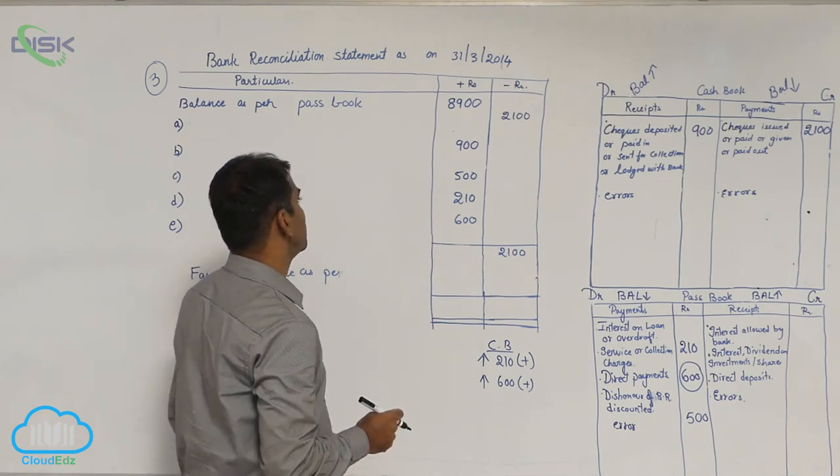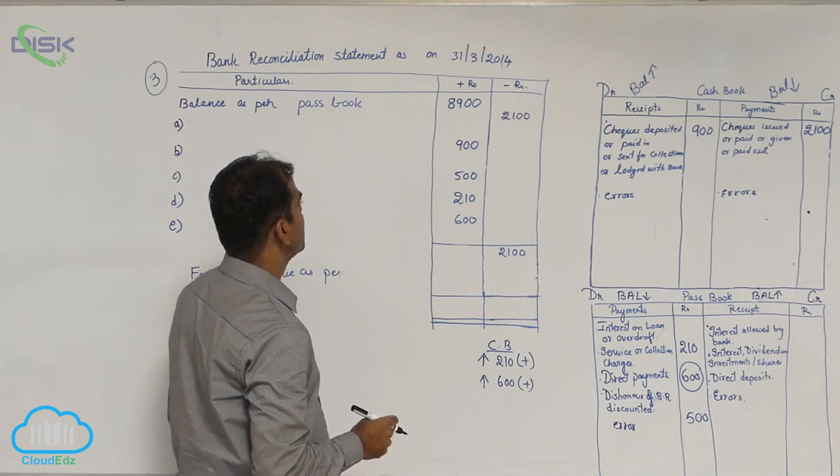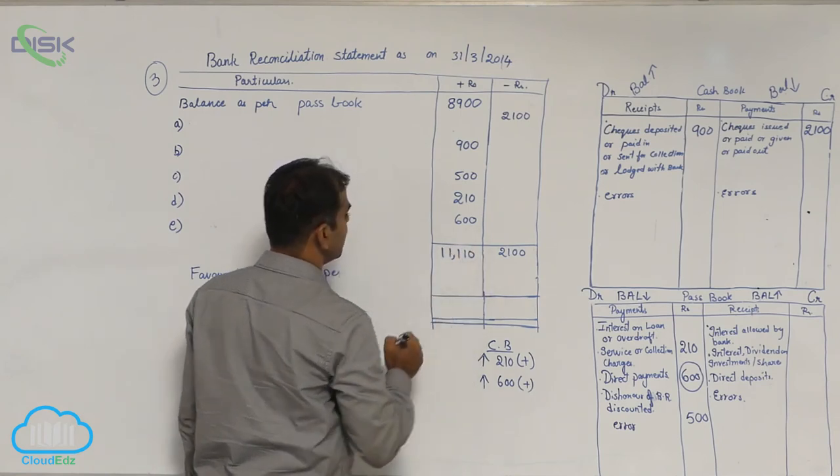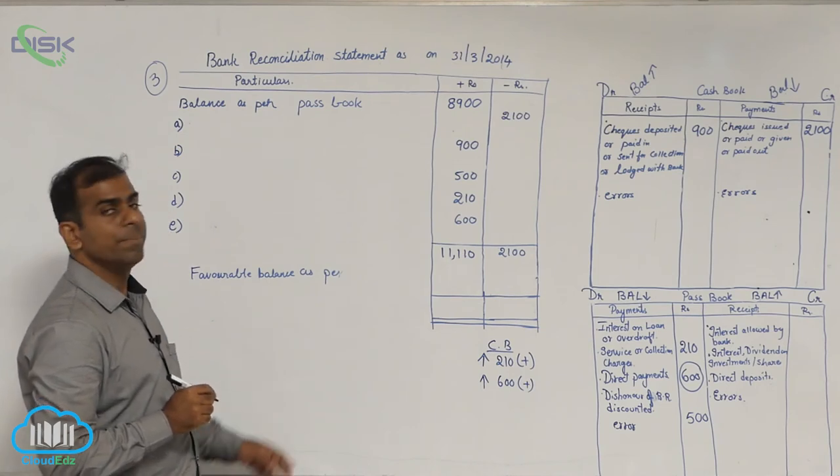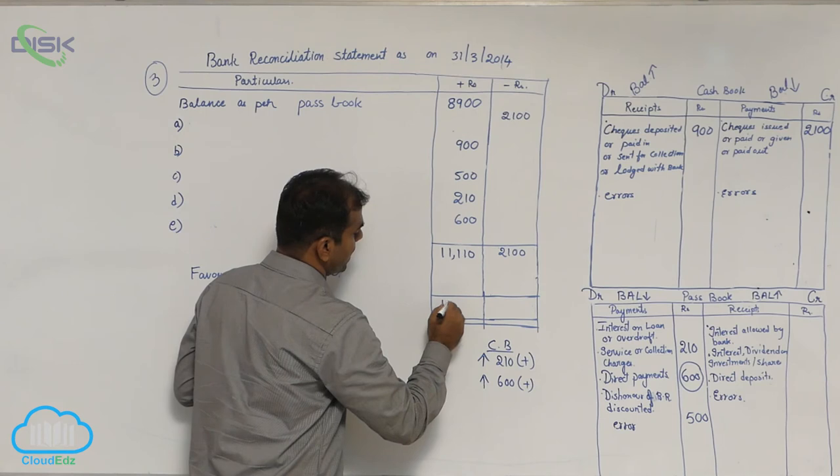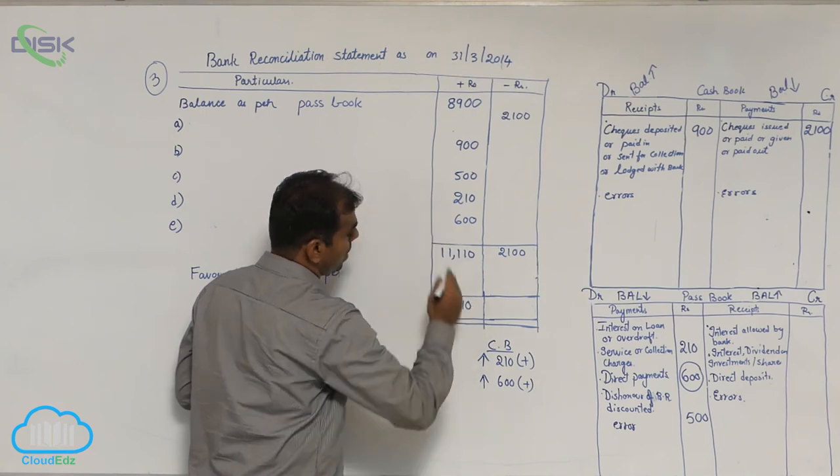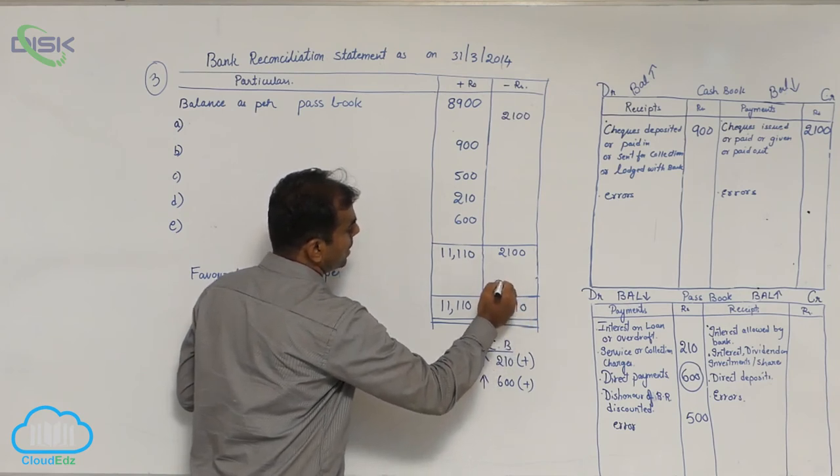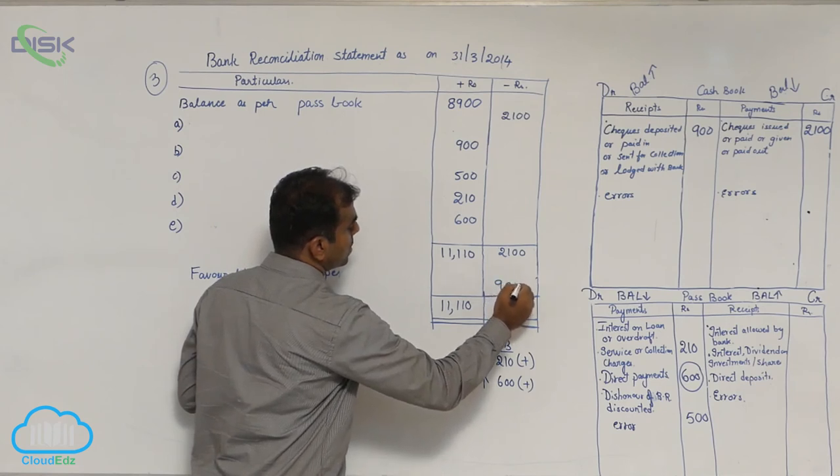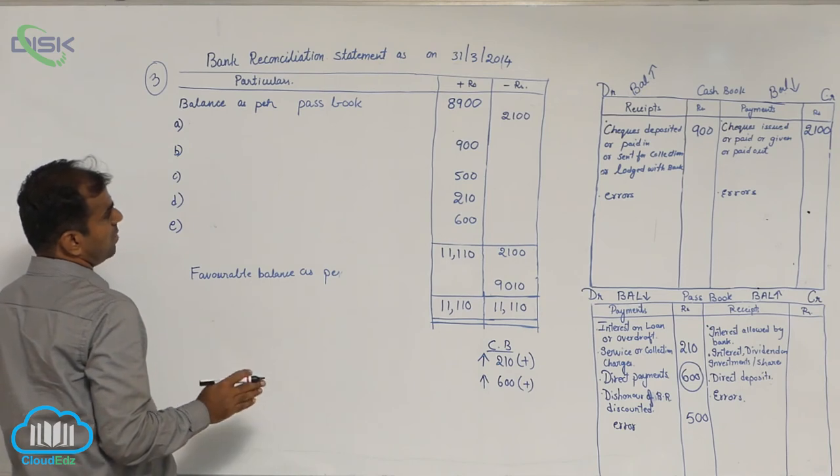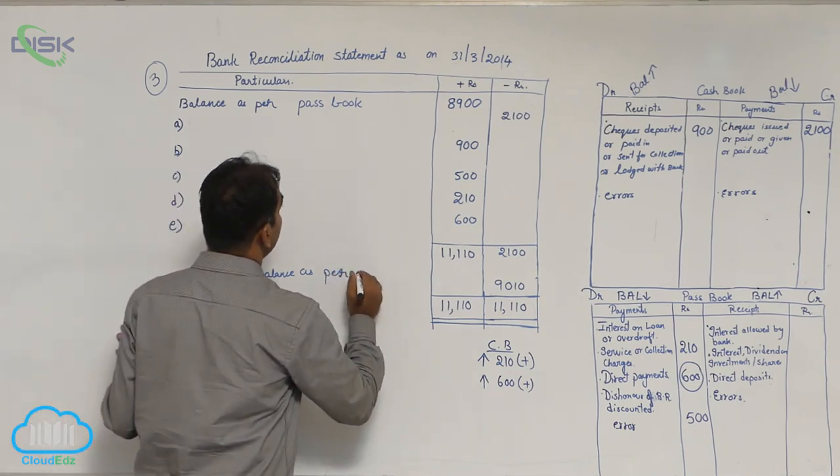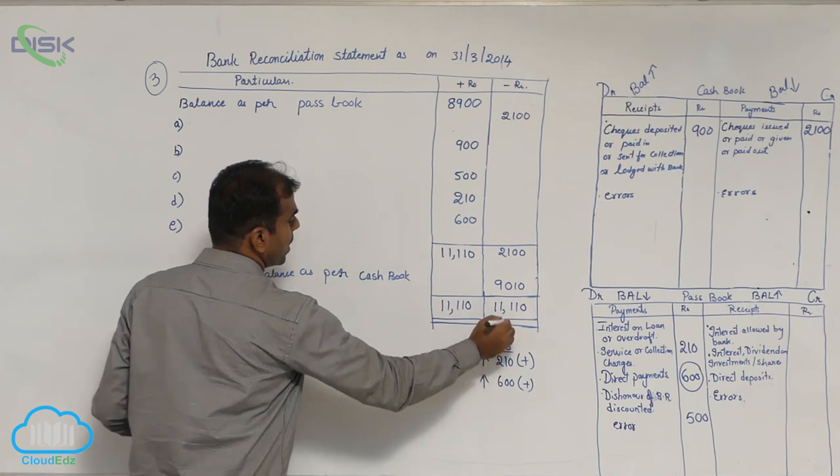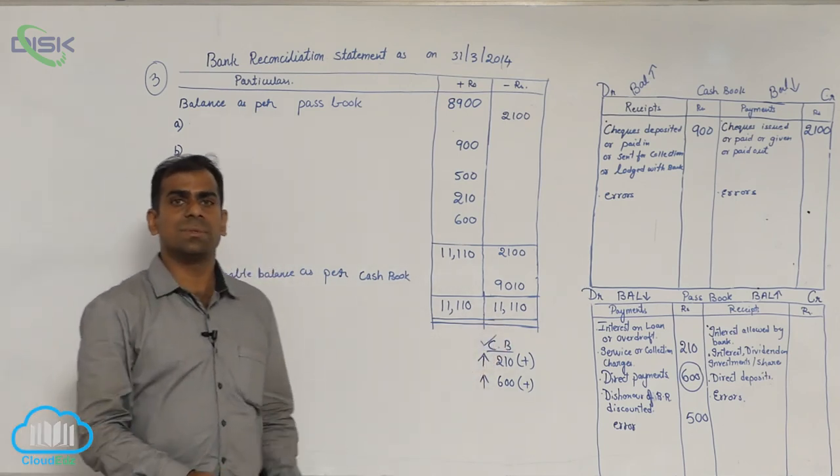This will be 8, 13, 22, 22, 3,100, 11,110, 110. Okay? Now if you see the total 11,110 is 1110, which is the plus column is more. So enter the total on both the sides. Minus 2,100, the amount comes to 9,010. So it is the plus column total was more. Hence we will write favorable balance as per which book? Cash book. Because that was the balance which we were trying to find out. With this, the third problem comes to an end.